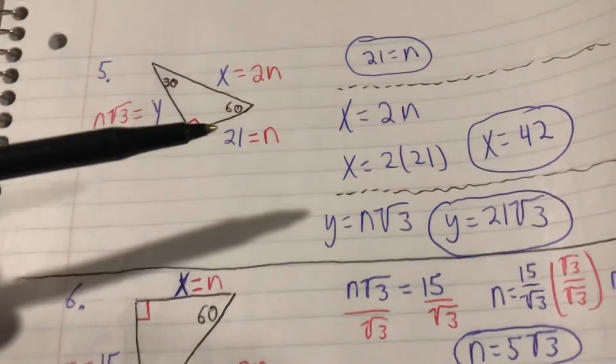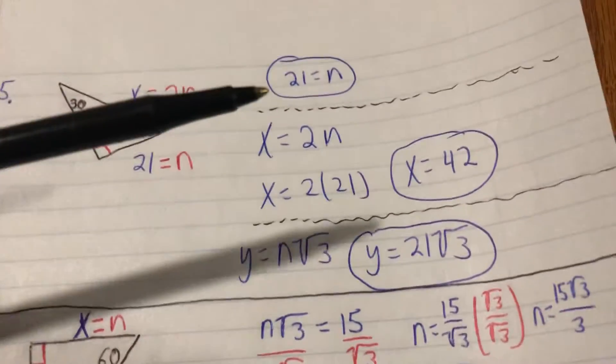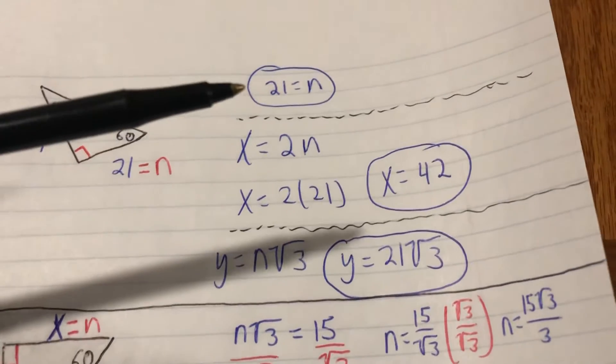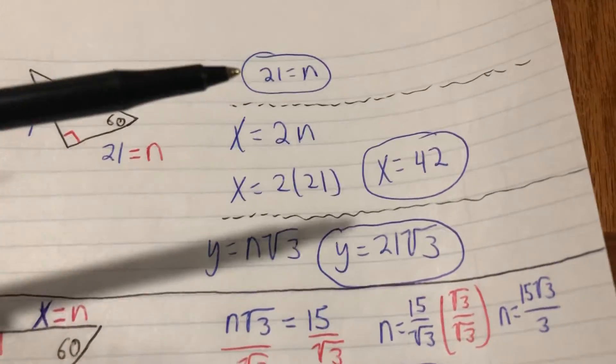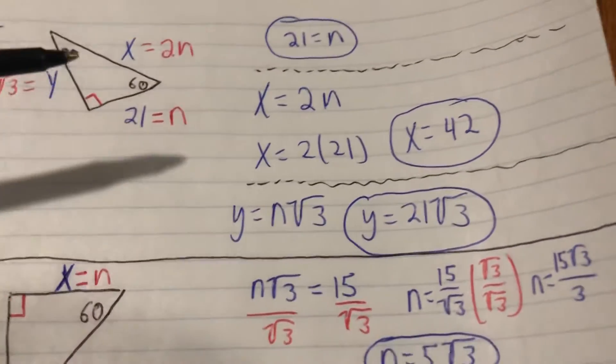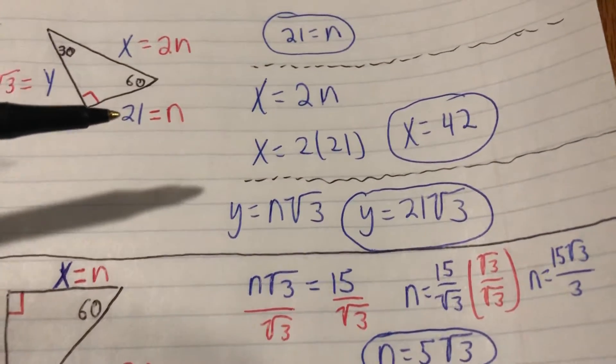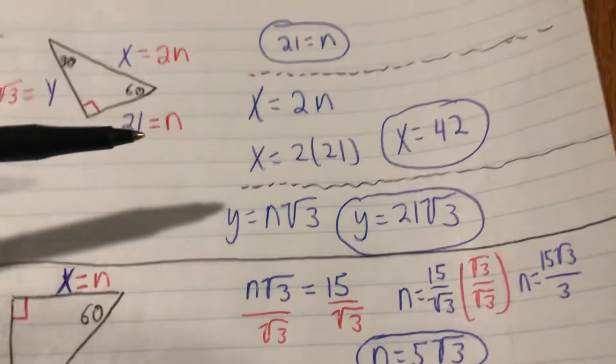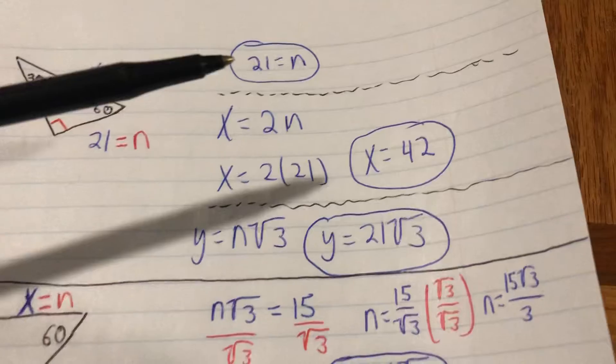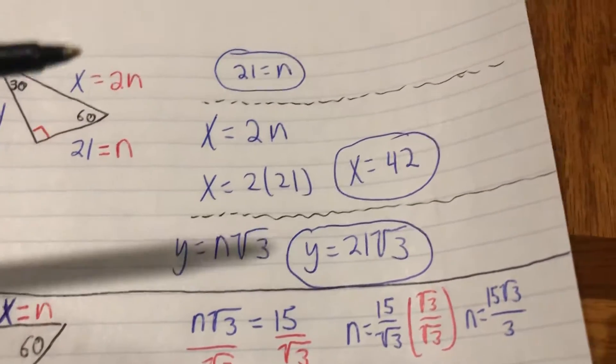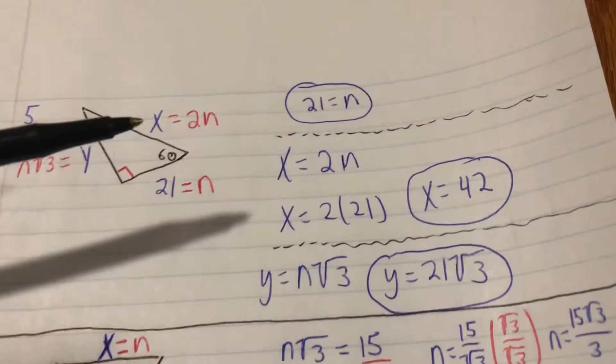The first thing you do after labeling on problems like this is figure out what the variable is worth, or what n is worth in this case. Right away it's pretty convenient for us—the side opposite from 30 is equal to n, we have that side is 21, so right away we know that 21 equals n. We're going to go ahead and take that information and use it on the other sides.